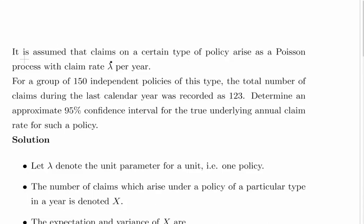It is assumed that the claims on a certain policy type arise as a Poisson process with a claim rate of lambda per year, so that's fairly straightforward there, lambda per year Poisson process. For a group of 150 independent policies, just remember that n equals 150 and it's a large sample, the total number of claims during the last calendar year was 123. Just remember that, that helps us get a point estimate.